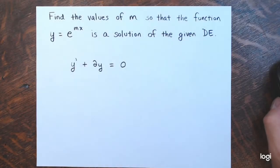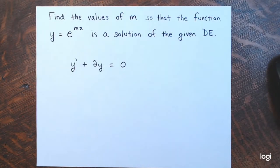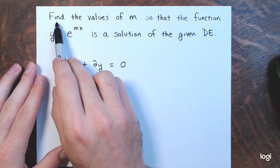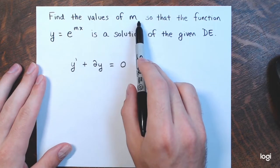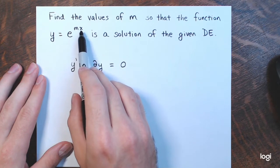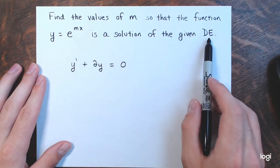If you get what's going on in this video after I'm done, it'll make it a lot easier to work on further solving and finding the general solution to these kinds of equations in later videos. For both examples, the instructions are: find the values of m so that the function y equals e to the mx is a solution of the given differential equation.